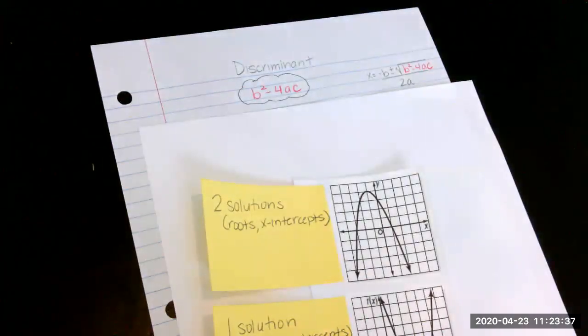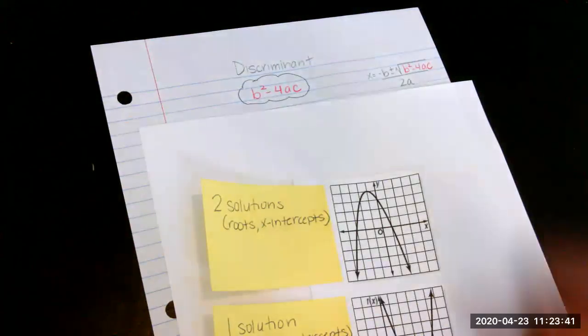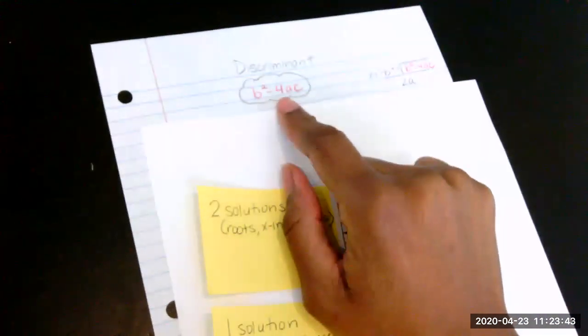Hello everyone. In this video, we're going to learn about something called the discriminant. The formula for the discriminant is b squared minus 4ac.